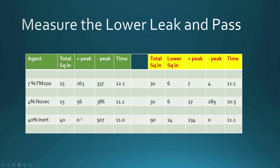Looking at an example: with FM200, Novac, and an inert — all having peak pressure over 250 Pa with 250 Pa as their limit — by tightening the lower leakage while maintaining the same or higher total leakage, we've gotten peak pressure down to a very low value while maintaining retention time. The only thing we've changed is the leakage distribution — what's called the leakage split. Here the total leakage is roughly double but distributed differently, with very little in the lower portion.